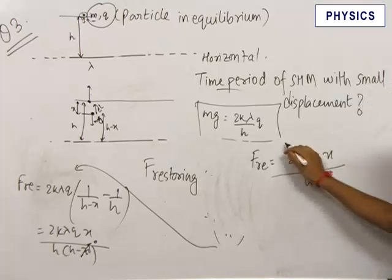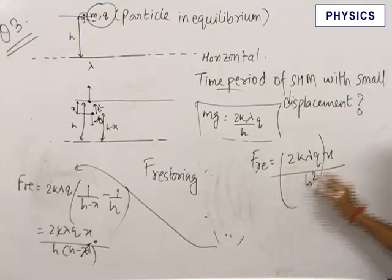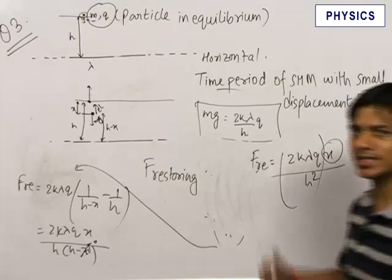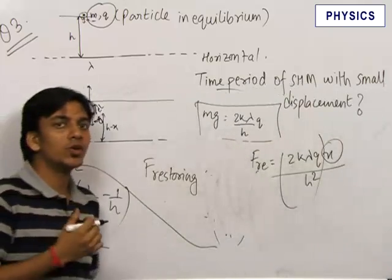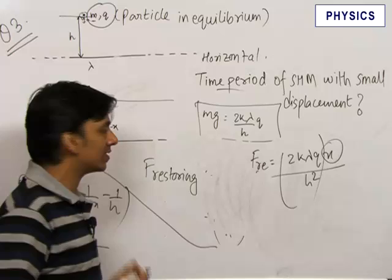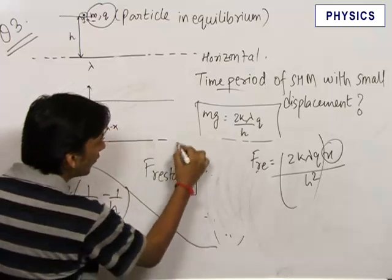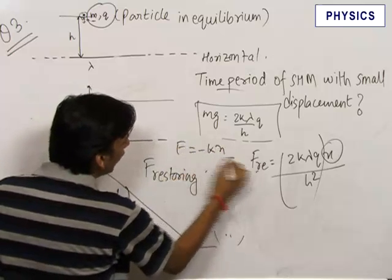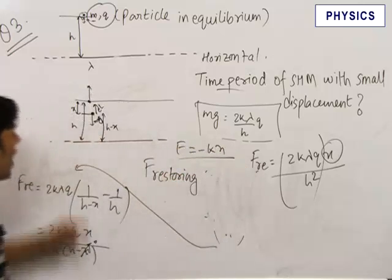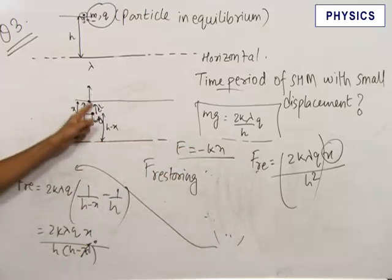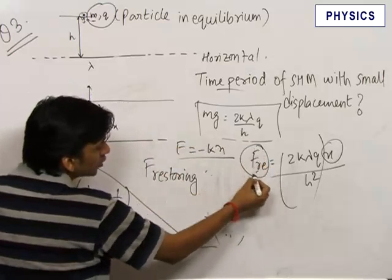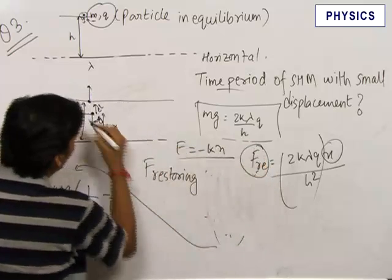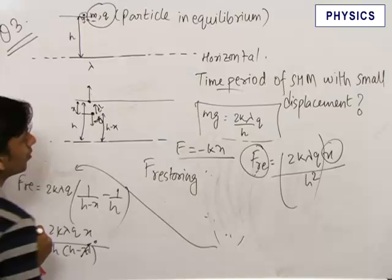We now see that the restoring force is directly proportional to x, which confirms SHM. For SHM, the condition is f equals minus kx. The negative sign accounts for direction — since we have written f restoring, which already represents the force toward the equilibrium position, the sign is already handled.